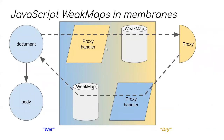Let's start by assuming we have a membrane and two object graphs, which we'll call wet and dry for convenience. Suppose we have a dry proxy to the document object. Already, there are several relationships defined — we have two proxy handlers and generally two WeakMaps.